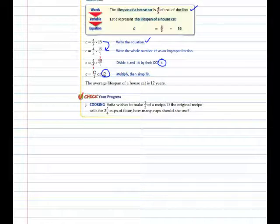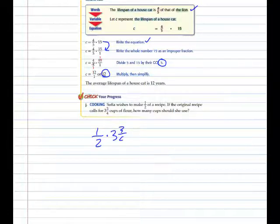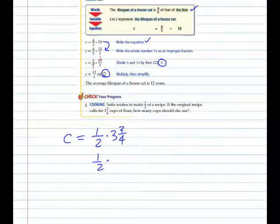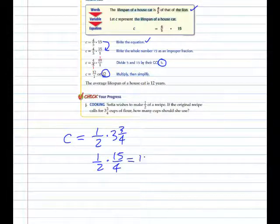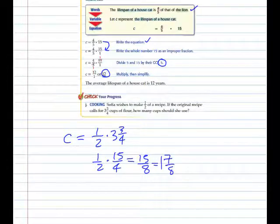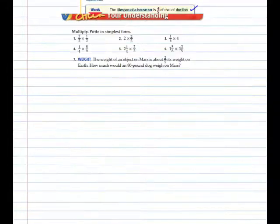Check your progress: Sophia wishes to make one-half a recipe. If the original recipe calls for three and three-fourths cups, how many cups should she use? The equation is one-half times three and three-fourths. Four times three is 12, plus three is 15 over four. Can't simplify here, so we get 15 over eight, which gives us one and seven-eighths cups needed to make half the recipe.